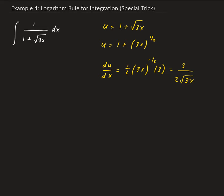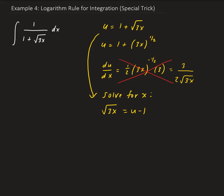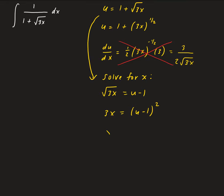So this approach won't work. What we need to do is go back to our original u substitution and solve for x. So we have the square root of 3x equals u minus 1. Squaring both sides gives us 3x equals u minus 1 squared, and dividing both sides by 3, we get x equals 1 third times u minus 1 squared.